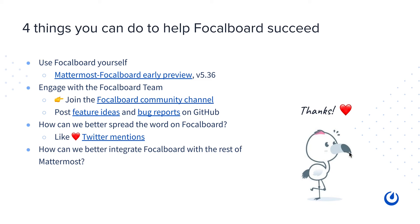Here are four things you can do today to help FocalBoard succeed. Number one, use FocalBoard yourself — download or upgrade to 5.36, follow the steps to enable FocalBoard, and start using it on your own systems or check out the early preview. Number two, engage with the FocalBoard team on the public FocalBoard community channel — we really welcome feedback, questions, and comments. FocalBoard is open source, so the best way to influence its future is through GitHub via feature ideas, bug reports, and PRs.